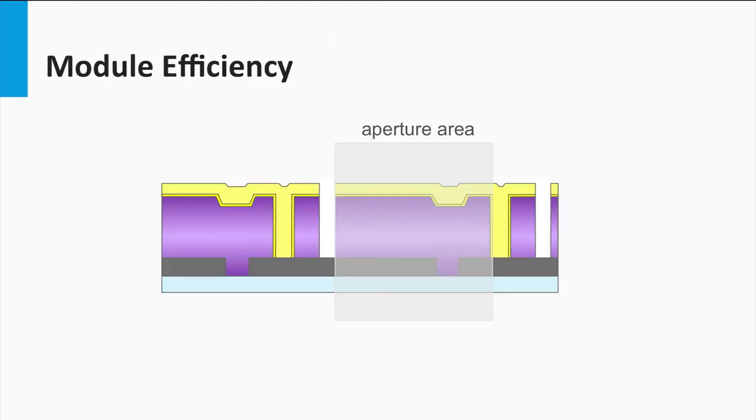The record efficiencies of modules are significantly lower than for the lab scale cells. Defining conversion efficiencies we have to make a distinction between two types of numbers.